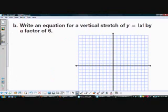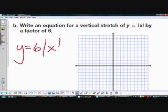If I want a vertical stretch of 6, oh well, that's just a slope of 6. So I make my A6, and I get Y equals 6 times the absolute value of X.